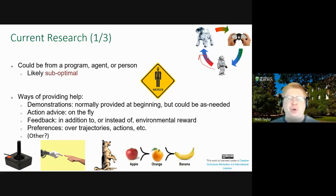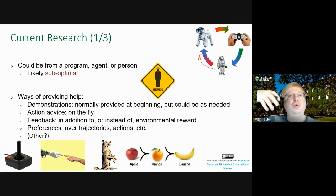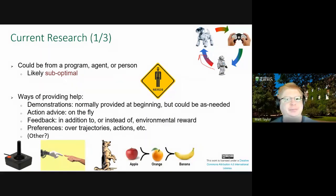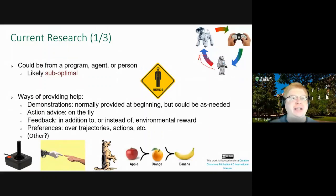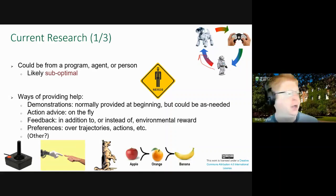In normal reinforcement learning, the reward typically comes from the environment — it tells you, 'oh, you just got plus one because you got an extra point.' In our research setting, we may want a human to help, or maybe the reward comes from the human instead of the environment. This is closely related to imitation learning, which is very similar to learning from demonstration.